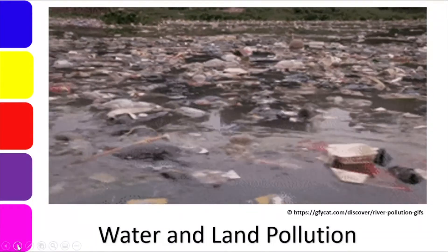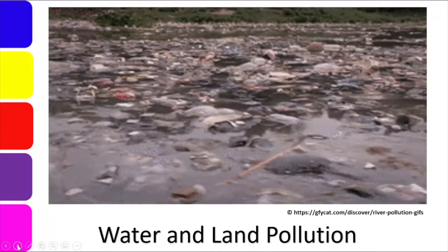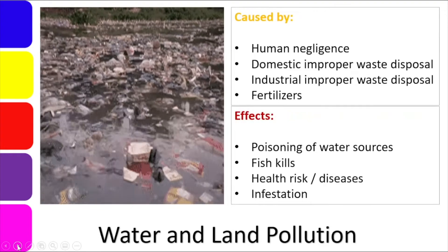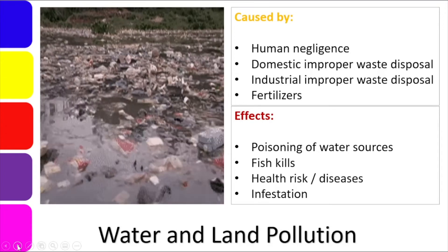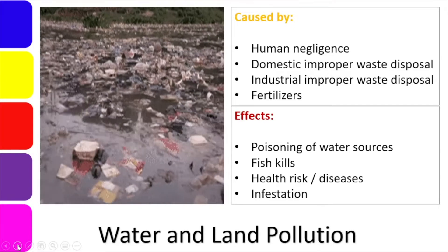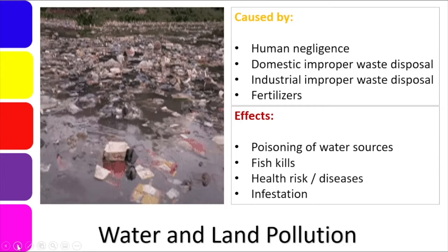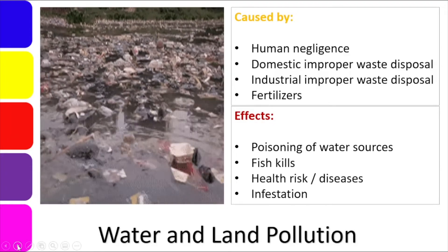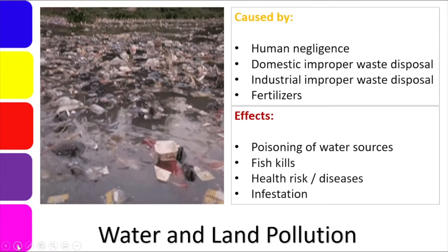One example is what we call water and land pollution. Do you have any idea how pollution of our land and water occurs? I-comment na lang yan so that I will read it and get ideas from you. So the causes of water and land pollution are: human negligence or neglect of people toward their environment; domestic improper waste disposal or wrong ways of disposing garbage from the house; and industrial improper waste disposal — garbage and waste materials from factories and other establishments. Also, the use of fertilizers, depending on what kind, can also harm nature, especially our water bodies.